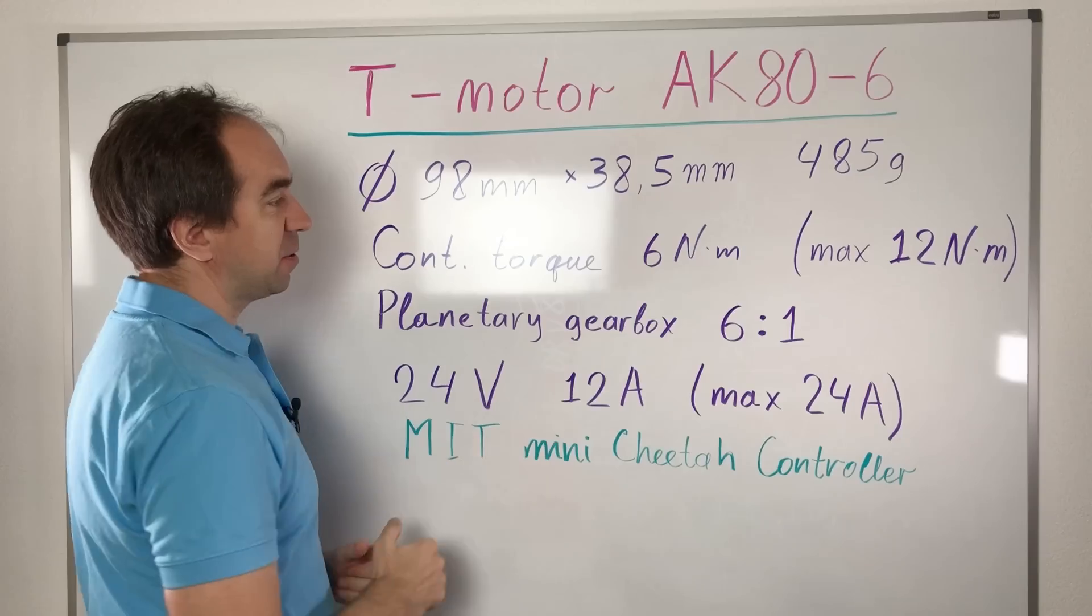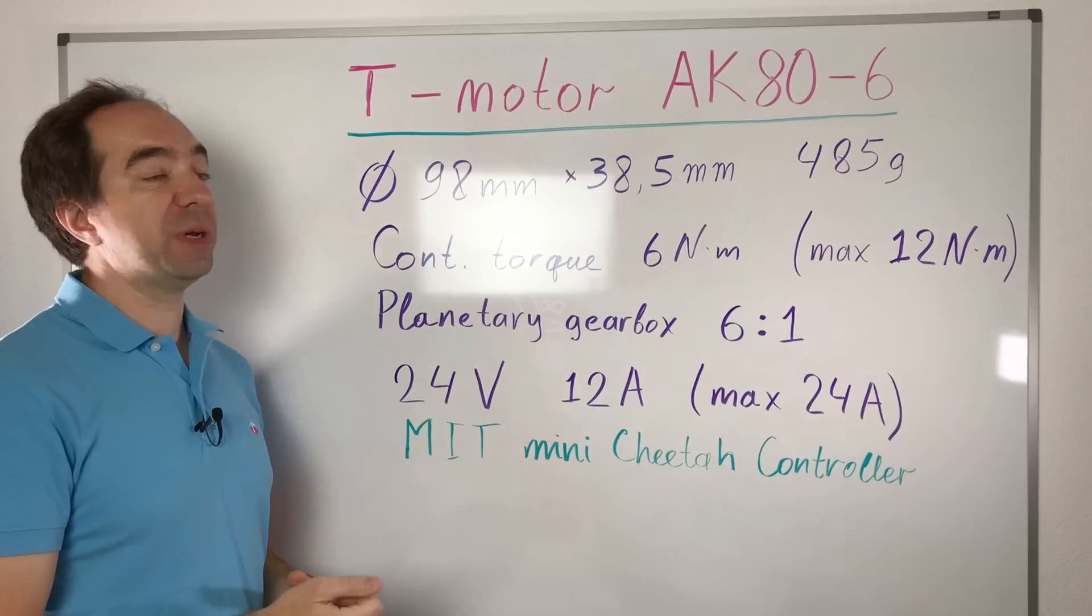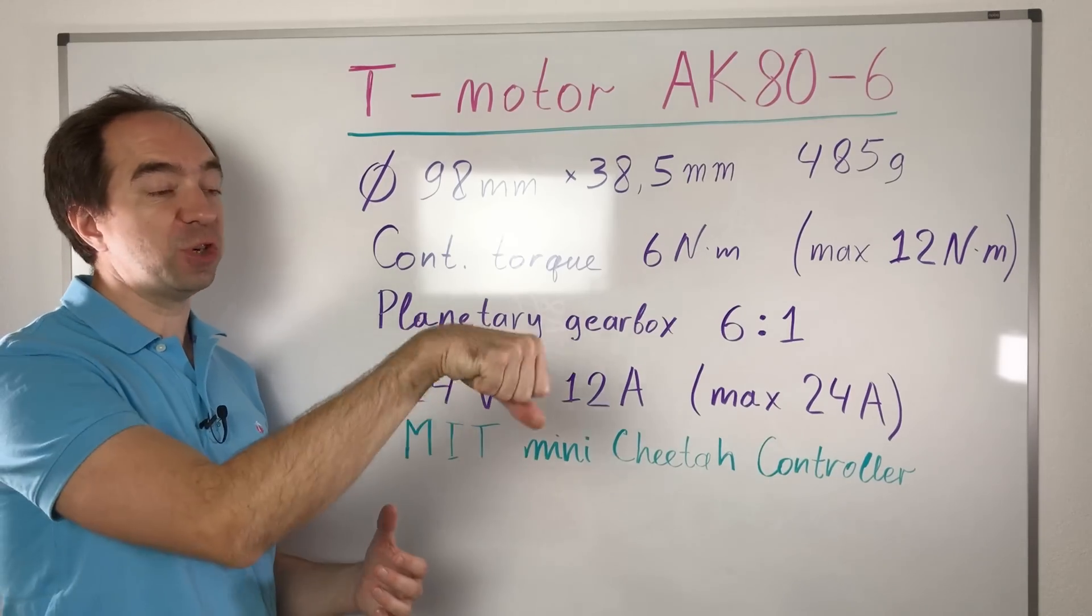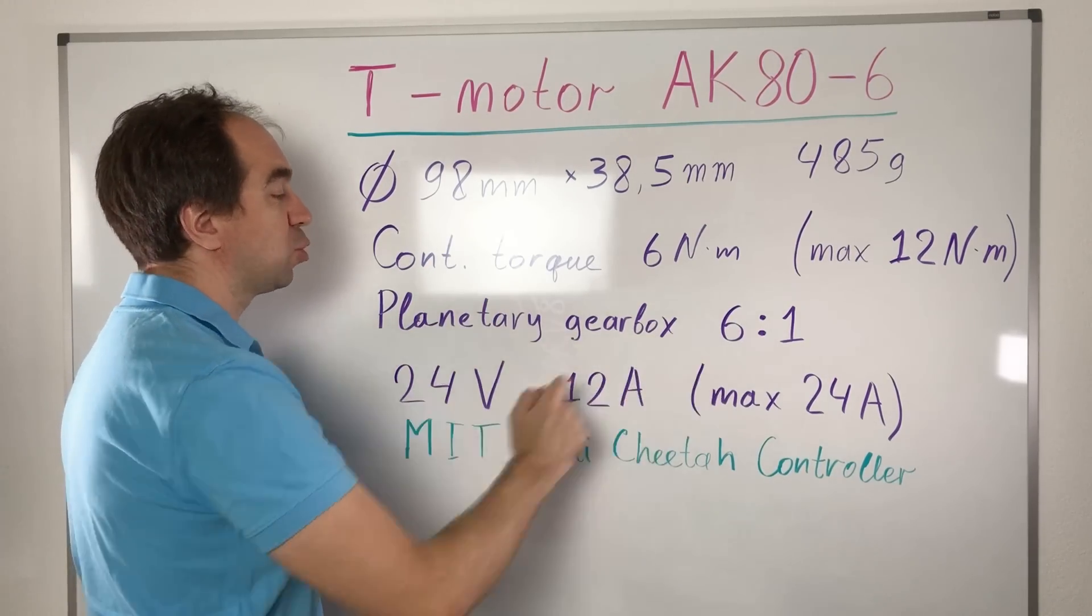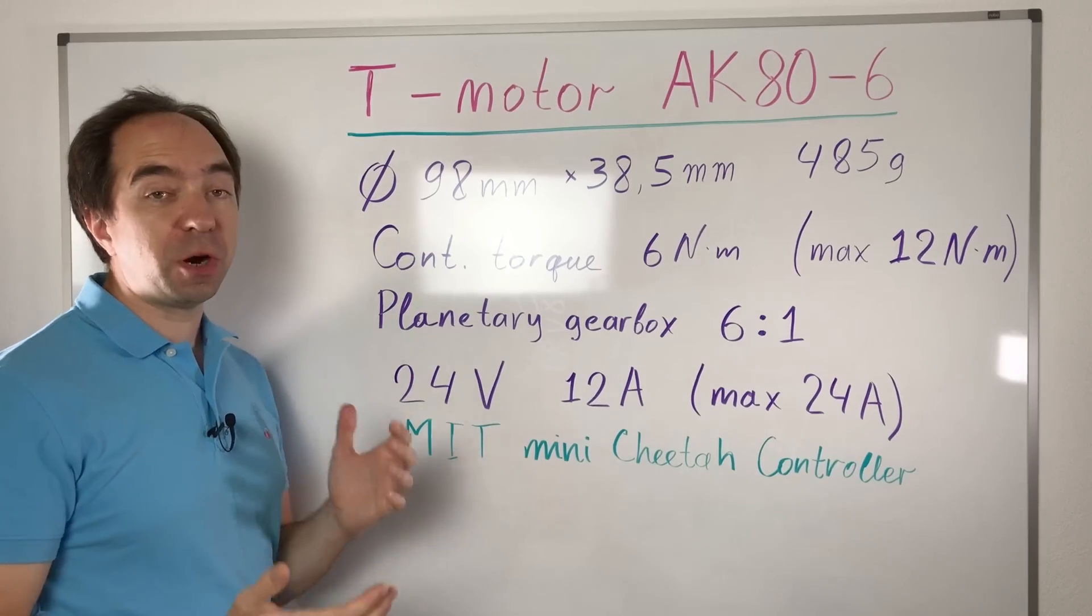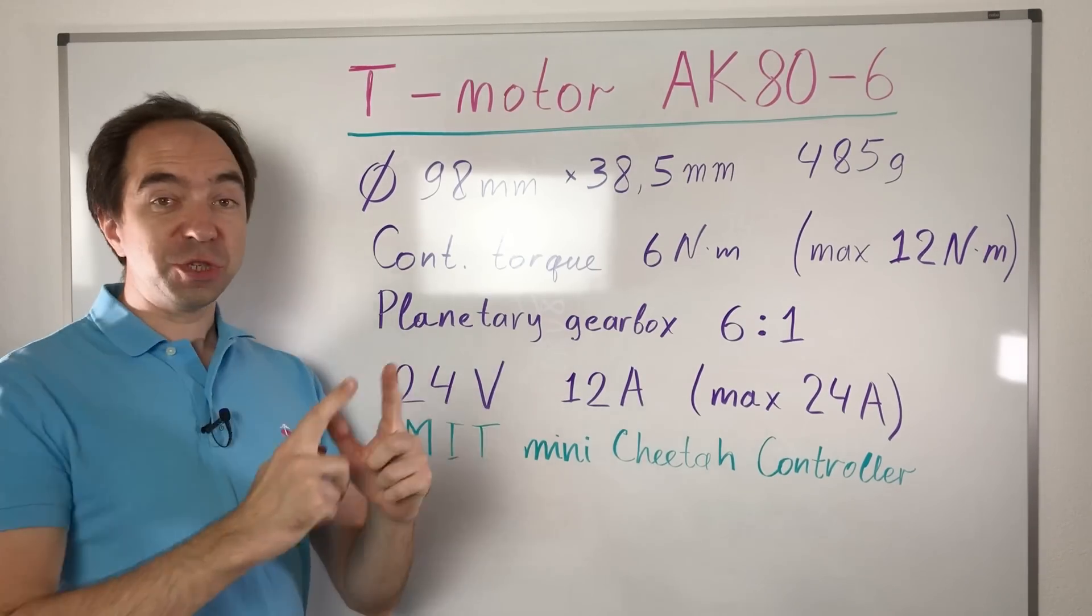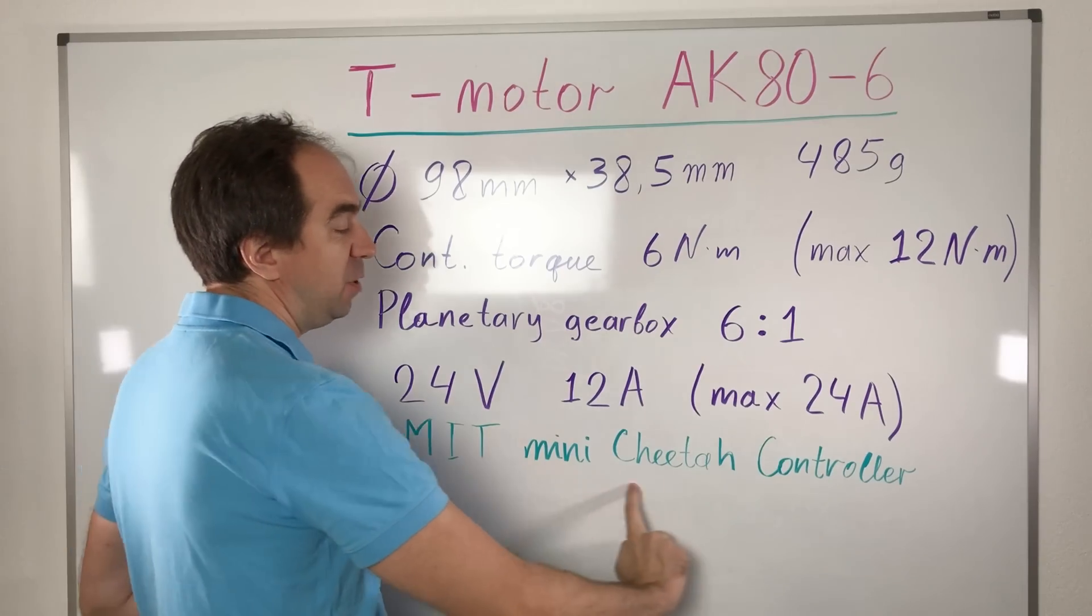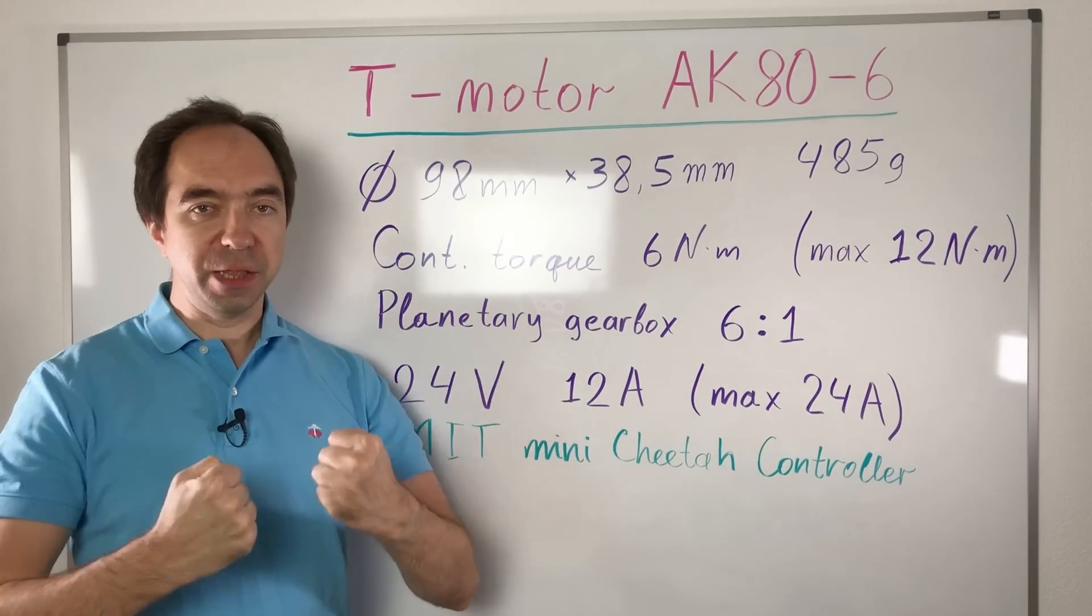Continuous torque is 6 newton meters. The peak torque is 12 newton meters. This is not very powerful, but it's enough for many applications, like for example, for the wrist of the robot. It has a planetary gearbox with 6 to 1 gear ratio. For the power supply, you need 24 volts and at least 12 amps. And the most interesting for me is that it has the MIT Mini-Cheetah controller, so it should be easy to control. It should be fast and agile.